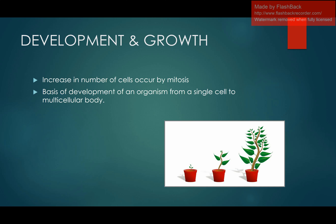When two germ cells fuse together, they result in the formation of a zygote. The zygote then multiplies and results in the formation of a multicellular body. So the formation of a multicellular body from a zygote involves an increase in the number of cells, which takes place by Mitosis. Here we have an example — you can see a plant in the seedling stage which, after mitotic division, grows in size and ultimately develops into an adult organism.